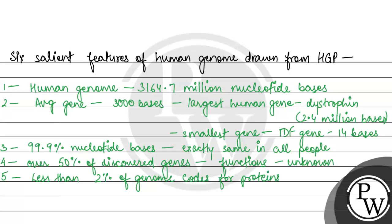The sixth and last salient feature is that repeated nucleotide sequences are present in large numbers in the human genome. So these are the six salient features of the human genome which are drawn from the human genome project. I hope you have understood the concept and best of luck.